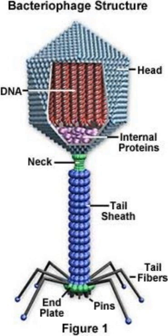Bacteriophage is a bacterial virus. It was discovered by Twort in 1915. It consists of head, neck and tail. The head is covered by protein called capsid, which is made up of subunits called capsomeres. The neck connects the head with the tail. The bacteriophage has double-stranded DNA in the head portion. It is highly coiled and tightly packed, with more than 75 genes. This is all about the structure of T4 Bacteriophage. Thank you.